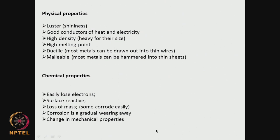What are the physical properties? Shininess and luster — that is not really important if the material is placed inside the body, but it is important if it is outside. Good conductor of heat and electricity — that is useful, it can quickly dissipate heat, unlike polymers which will not dissipate heat. High density — they are heavy for their size; a small piece of metal may weigh much more than a similar size of polymer.